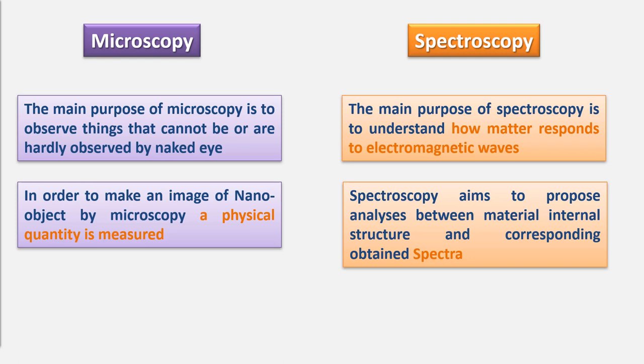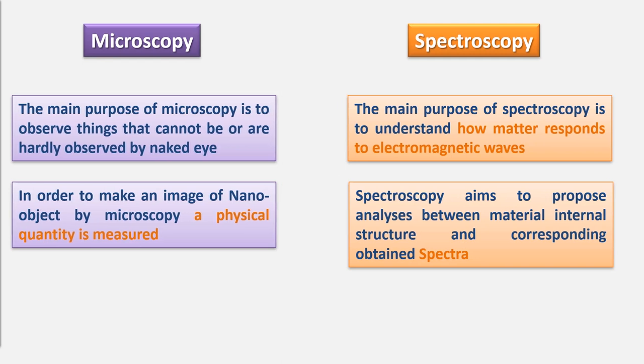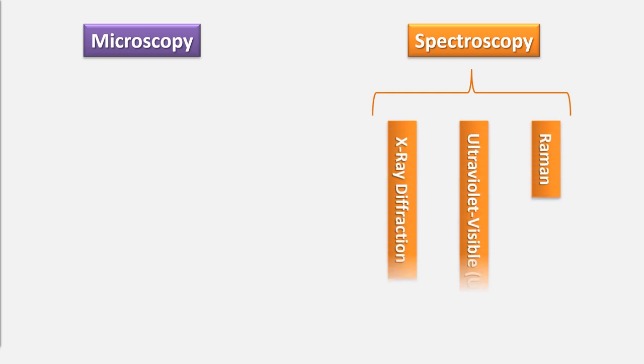Although in both branches we can generate images of the target material, in the case of spectroscopy, acquiring an image is not necessary—just a spectrum would be enough. I'll talk about spectra in the spectroscopy part if you don't know what it is. There are several spectroscopy techniques, but the most used ones are X-ray diffraction, ultraviolet-visible spectroscopy, and Raman spectroscopy.